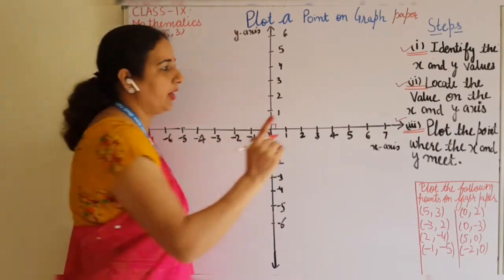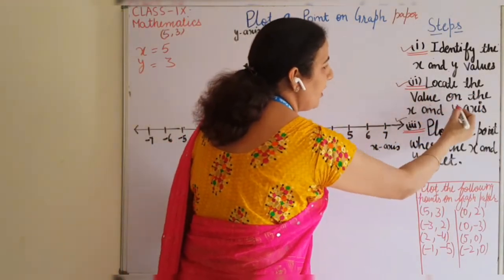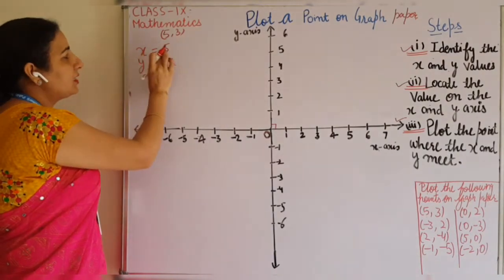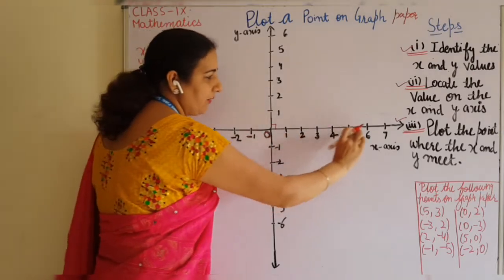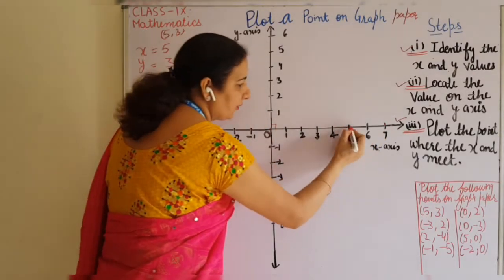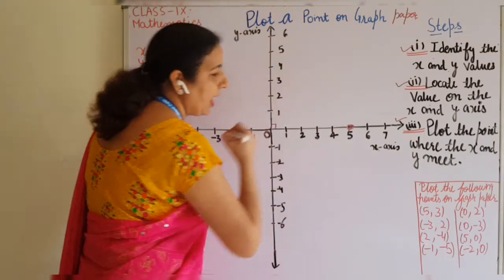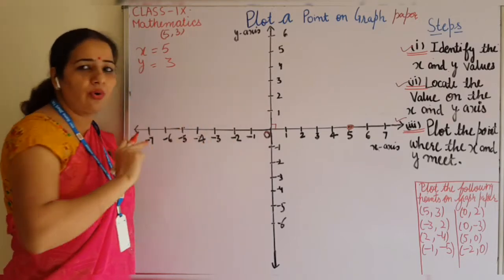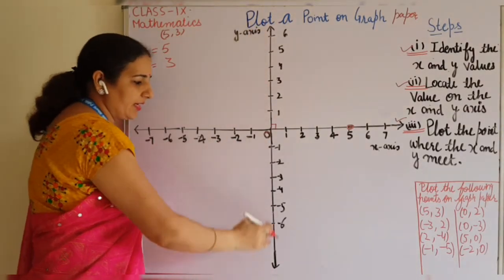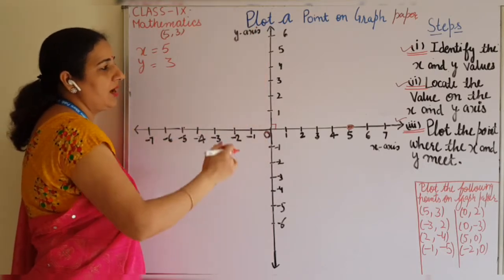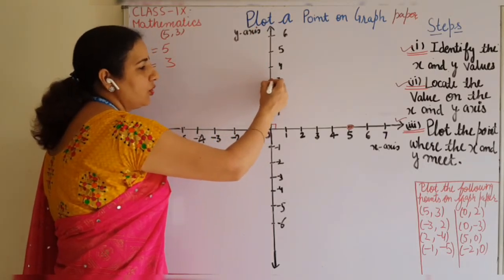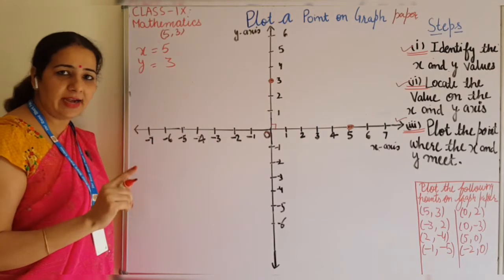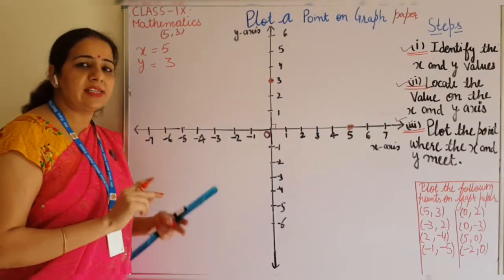The second step is: locate the values on the x-axis and y-axis. Hide the y value — x is equal to 5 — just look on the x-axis and find where x equals 5, so x is 5 here, and plot this point. After that, y is equal to 3, so go on the y-axis and check where 3 is — y is 3 here — and plot this point. Second step is completed.